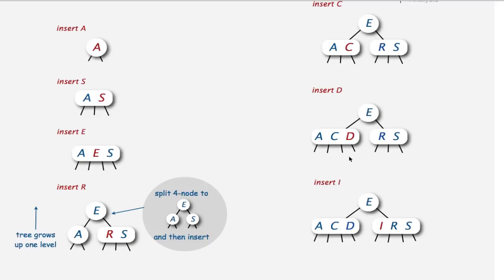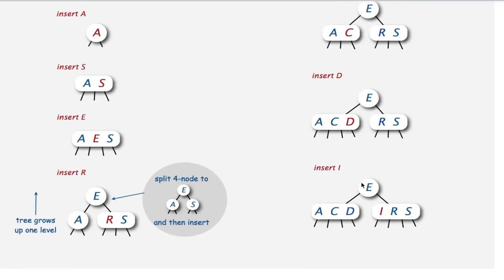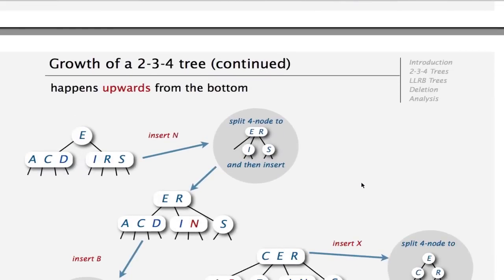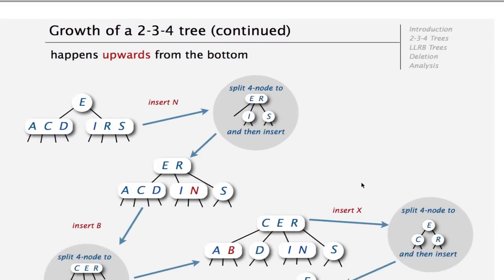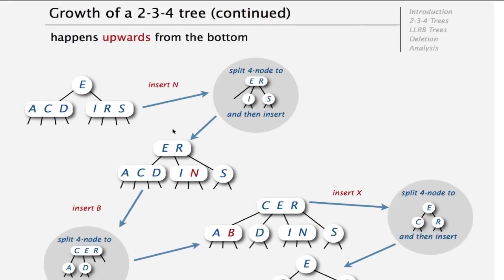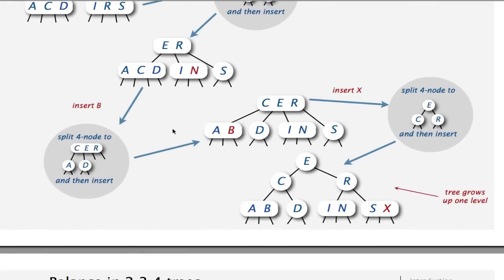We insert D. It inserts without a problem. Now, when we insert I, it goes down here without a problem. And now the next time that we need to add something here, we want to insert an N, then we go here and we see that there are 4-nodes here. So we have to split them. So we get this configuration, E-R-I-S. And then we insert the N to here. So that's basically how the whole thing works.